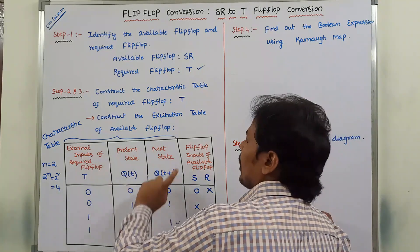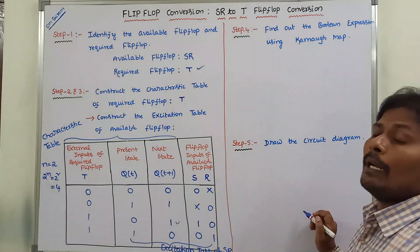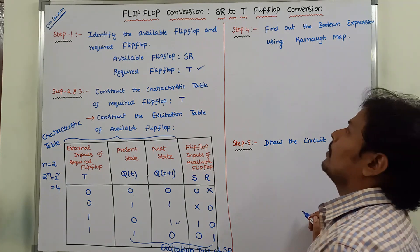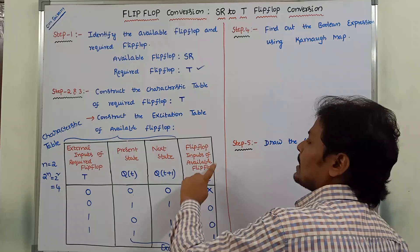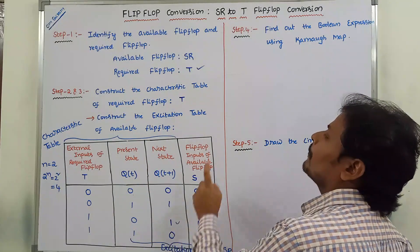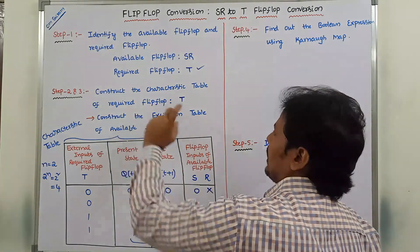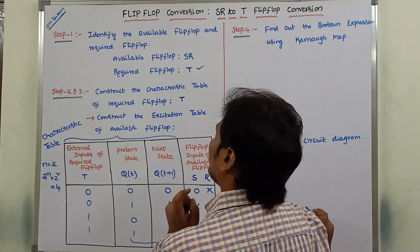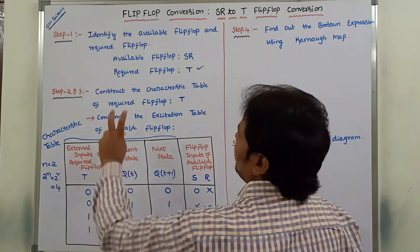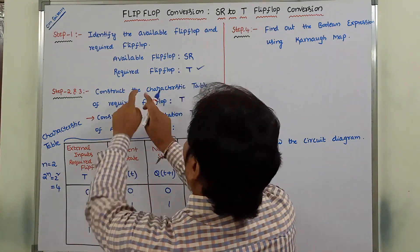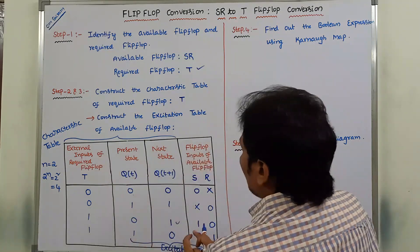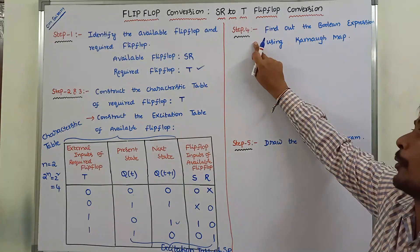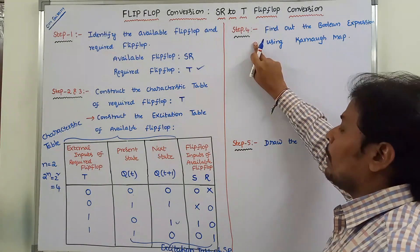The excitation table of the available flip-flop becomes step 3. The characteristic table of the required flip-flop T becomes step 2. The first three columns represent step 2 and the last three columns represent step 3. Now we go to step 4.